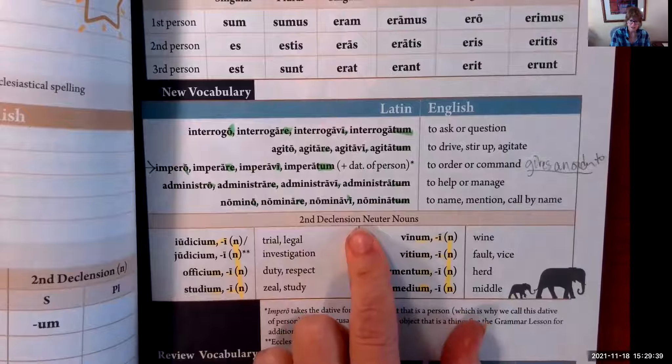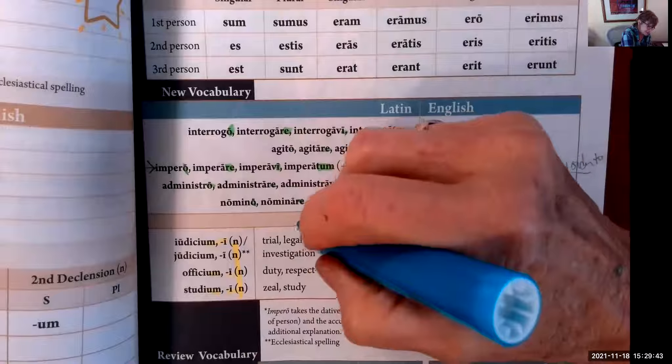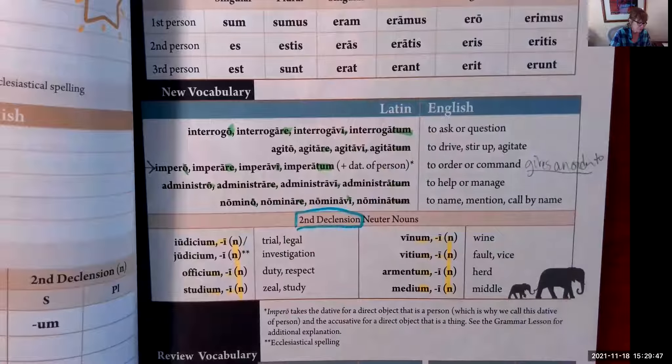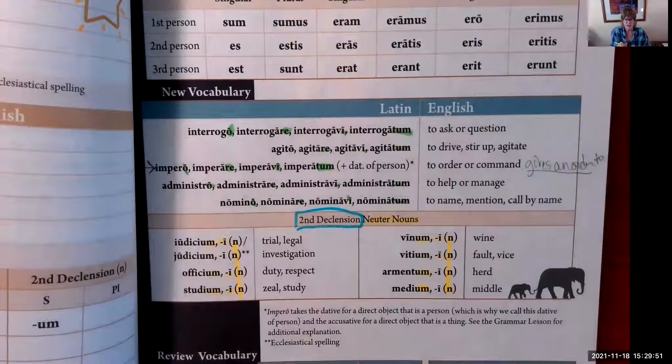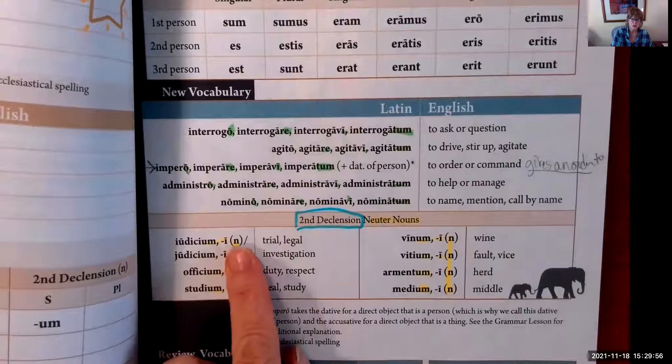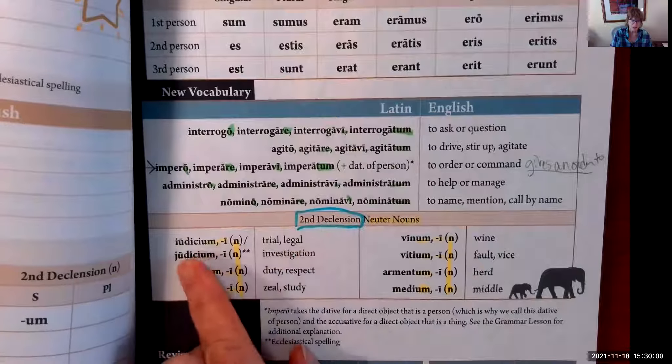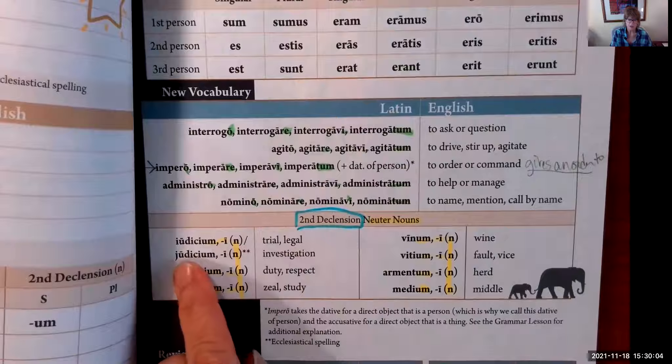Now we've got some second declension neuter nouns here. So with that, I'm going to use the blue, and then I'm going to take my yellow, because that's what distinguishes it as a second neuter. We've got iudicium, iudicii—trial, legal. It looks like in the ecclesiastical spelling...